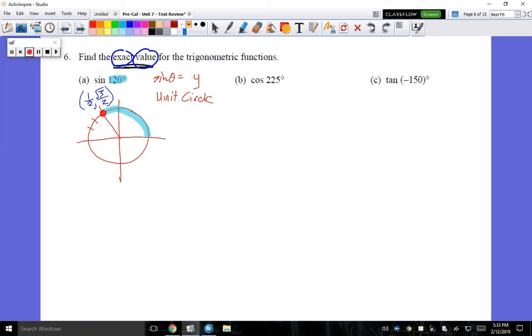And then make sure that I have the positive and negative signs where they're supposed to go. A negative X, positive Y, because it's in quadrant 2. And all I care about is what is the Y value at this point. So my answer is going to be root 3 over 2. That's my answer for part A.